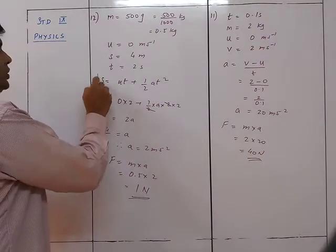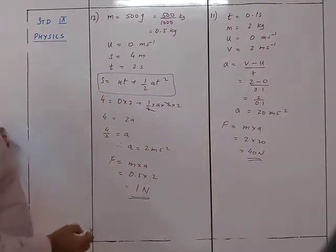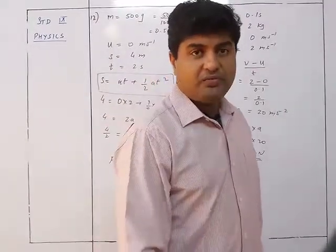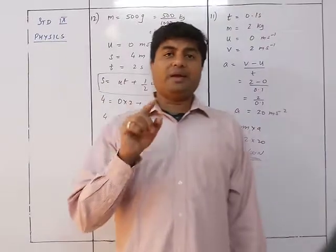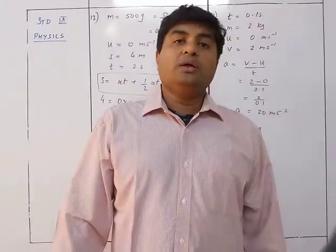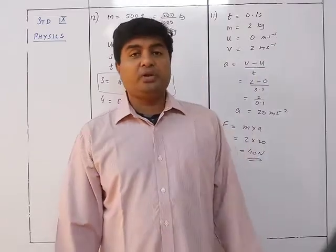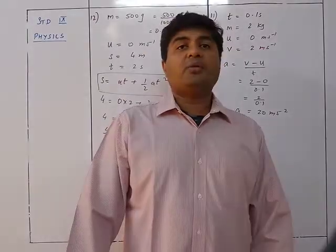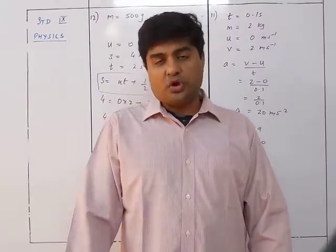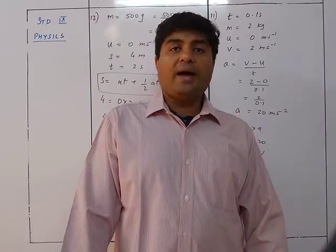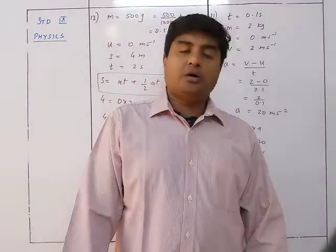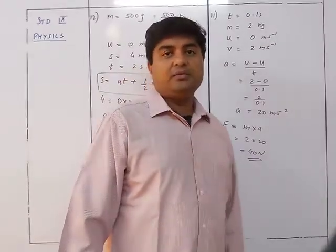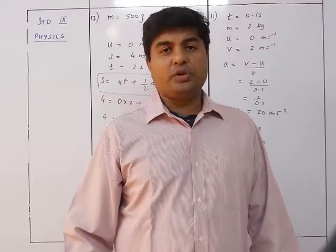This sum again required the equations of motion, which are always needed. Be alert: whenever dealing with laws of motion or motion problems, you will need the three equations — v equals u plus at, v squared equals u squared plus 2as, and s equals ut plus half at squared.